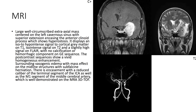On T2-weighted imaging, this mass has an iso-intense signal. On MRA, we're able to appreciate a reduced caliber and encasement of the terminal segment of the internal carotid artery, as well as the M1 segment of the middle cerebral artery.